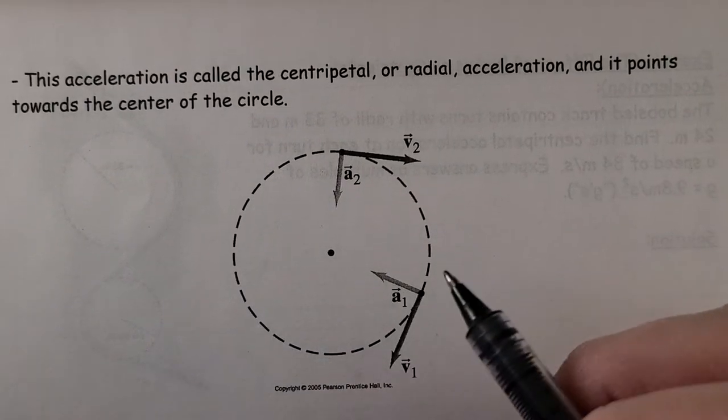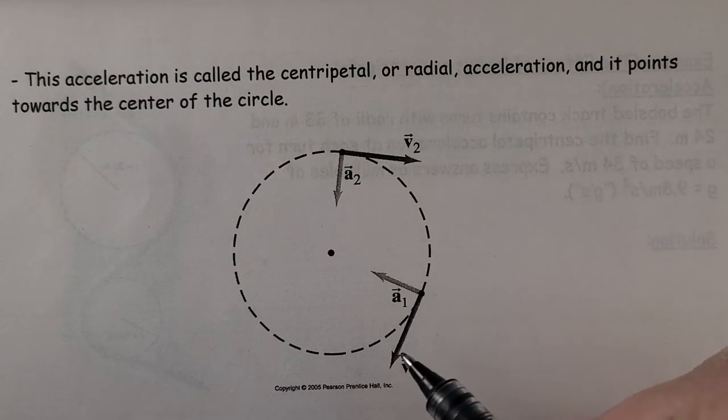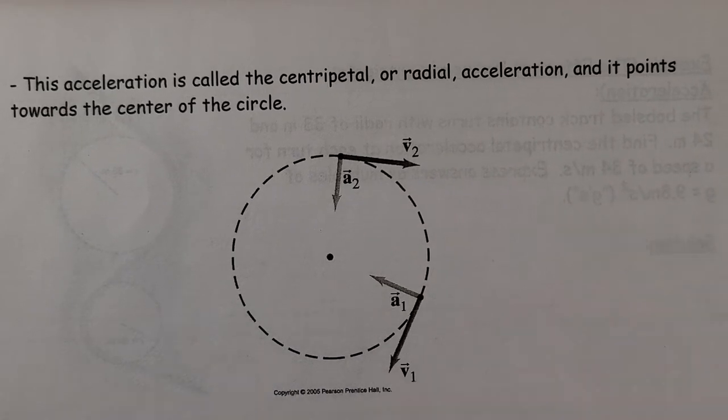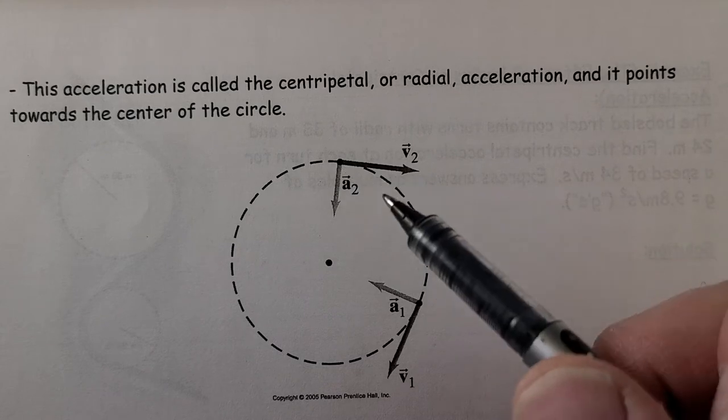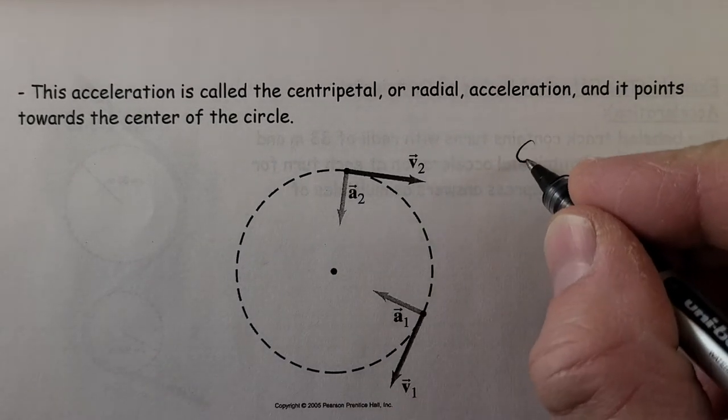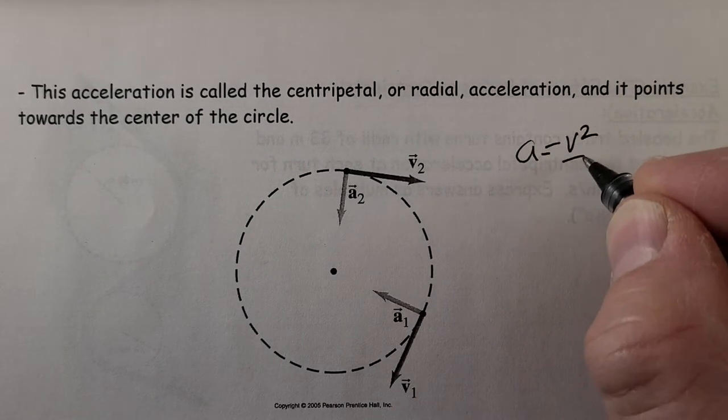Welcome back to Physics 30. We're continuing with the last section of acceleration and centripetal uniform circular motion. The acceleration that we figured out on the previous page, A equals V squared over R.